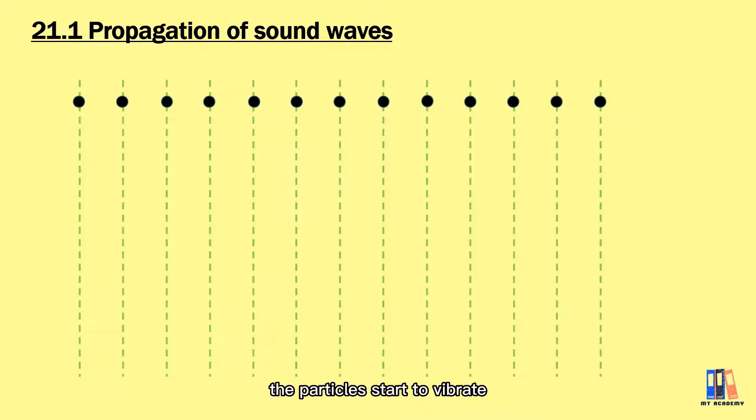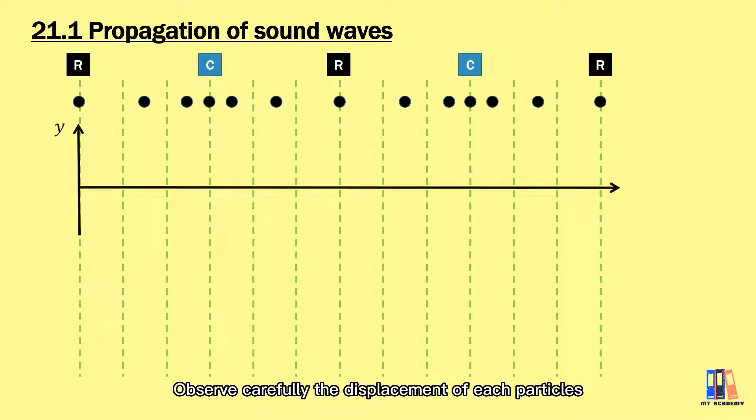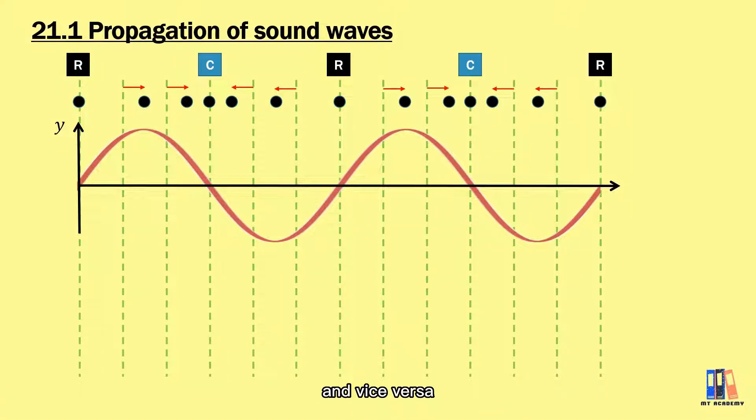So let's see a simple diagram. When there is some wave propagates, the particles start to vibrate. Observe carefully the displacement of each particle. Displacement of a particle is positive when it is at the right of its equilibrium position and vice versa. This creates compression and rarefaction region.